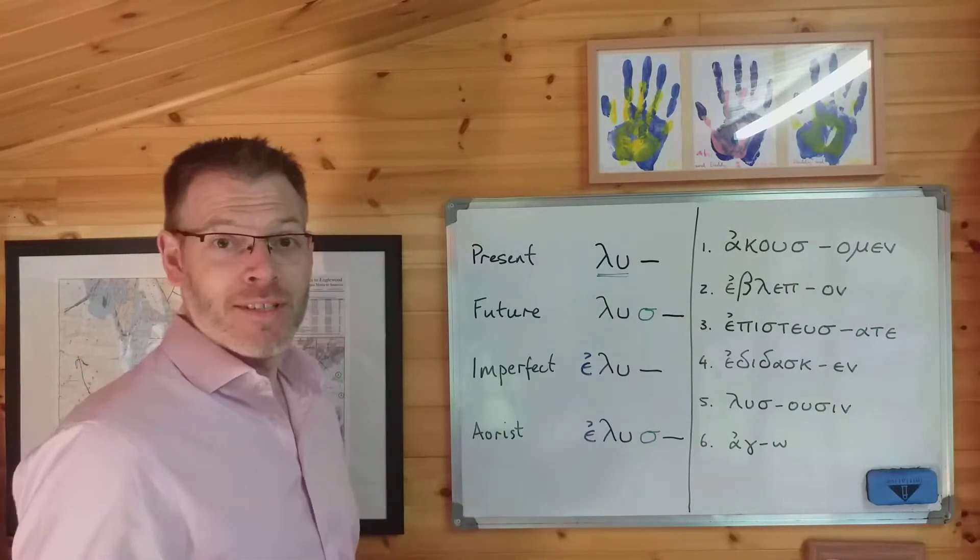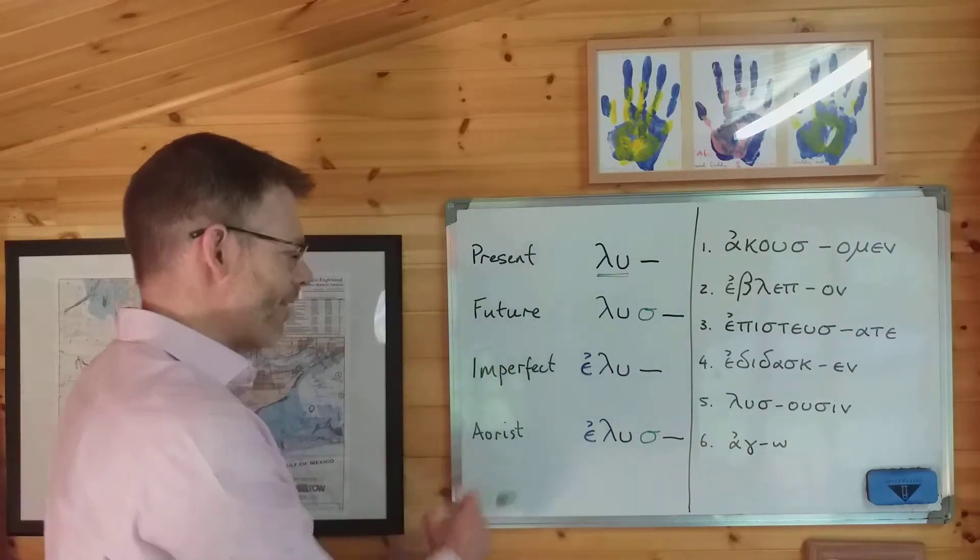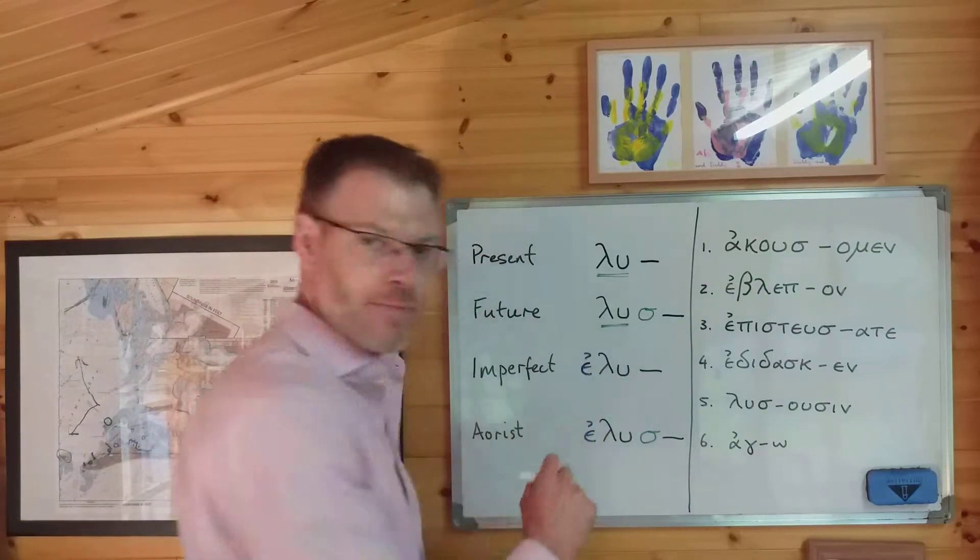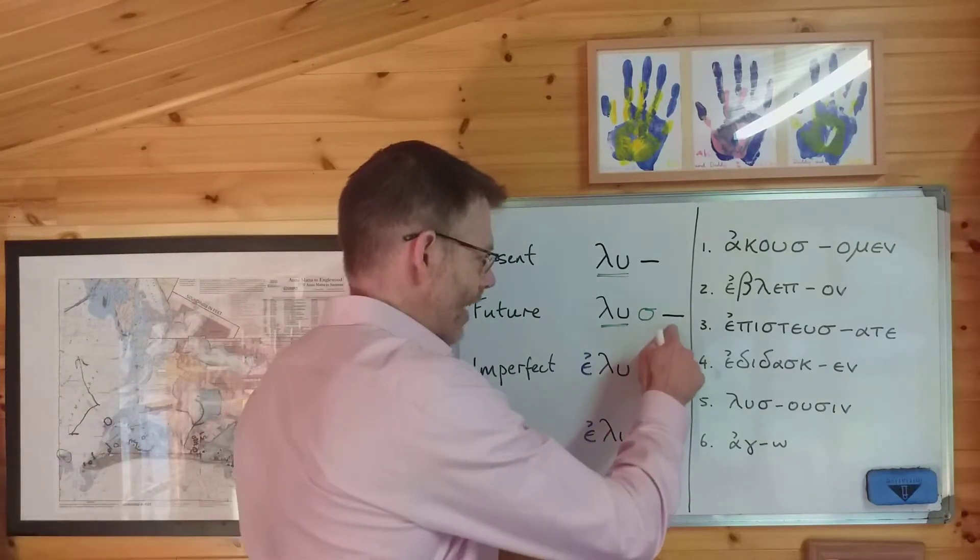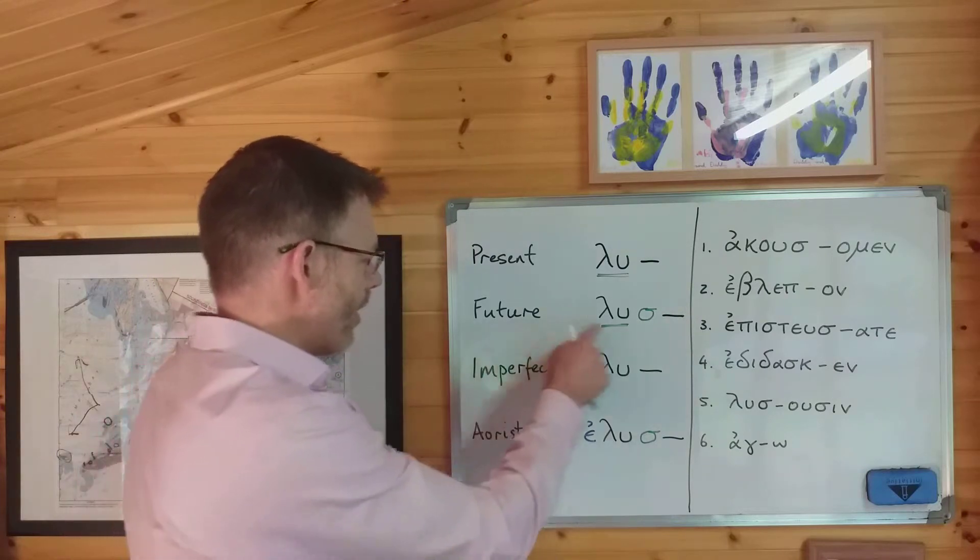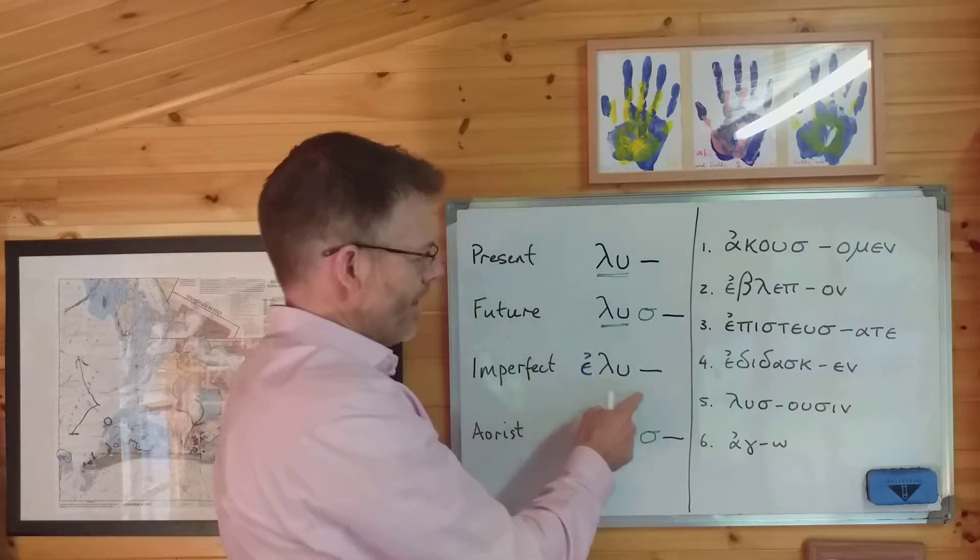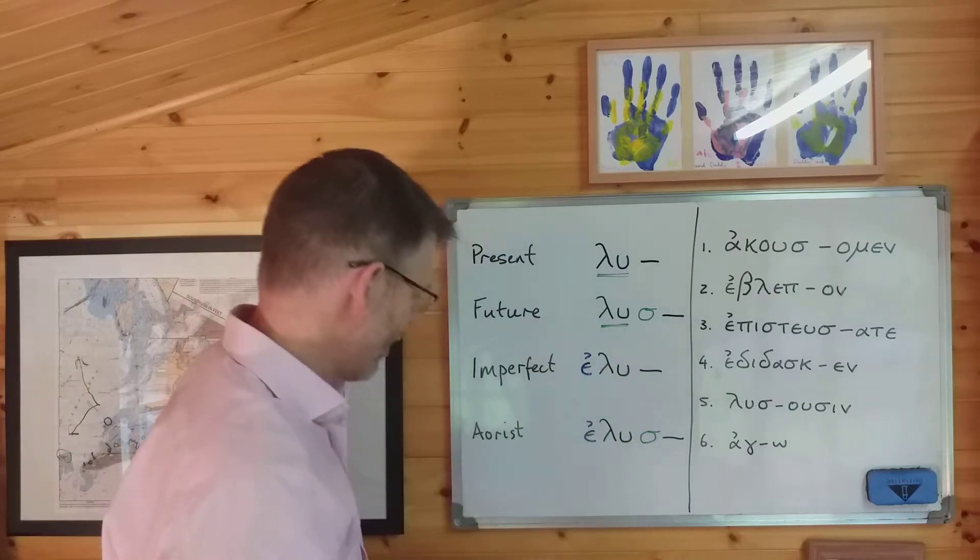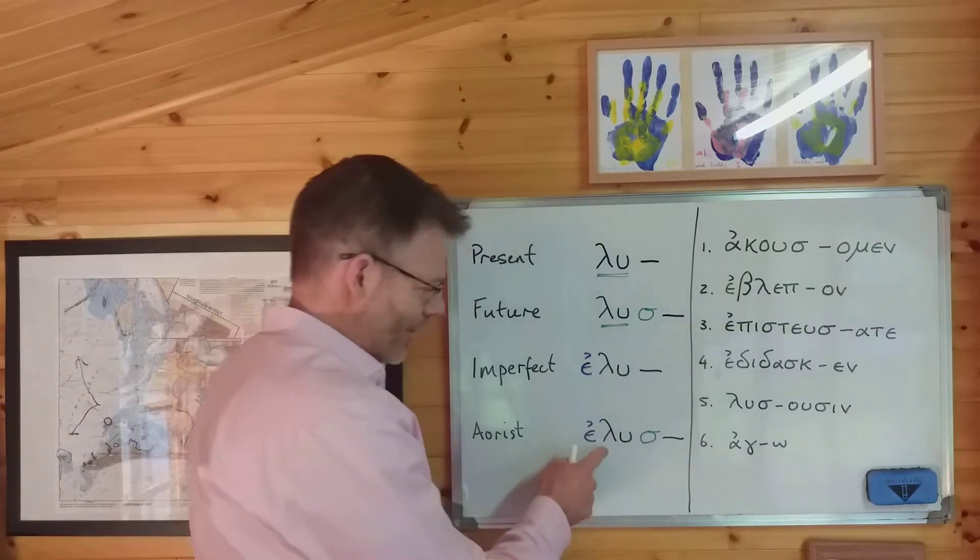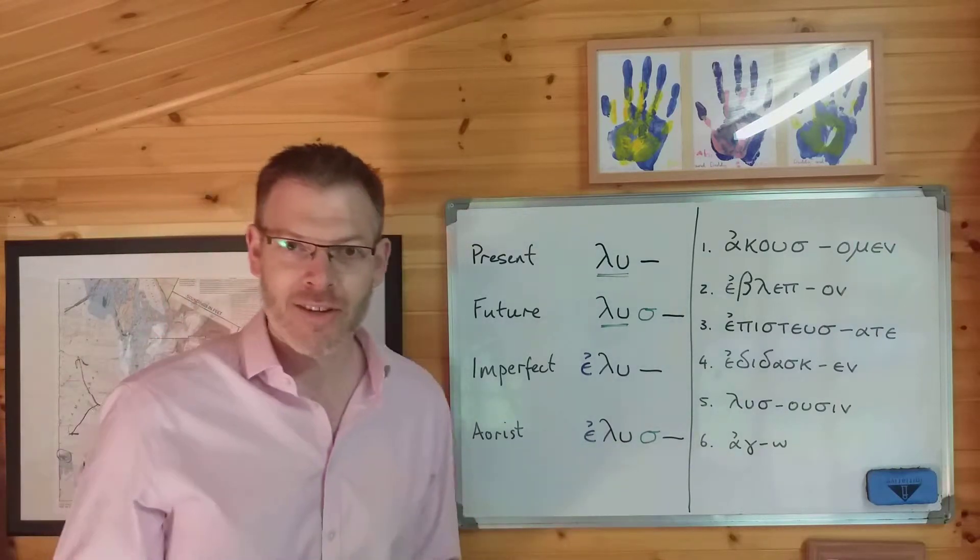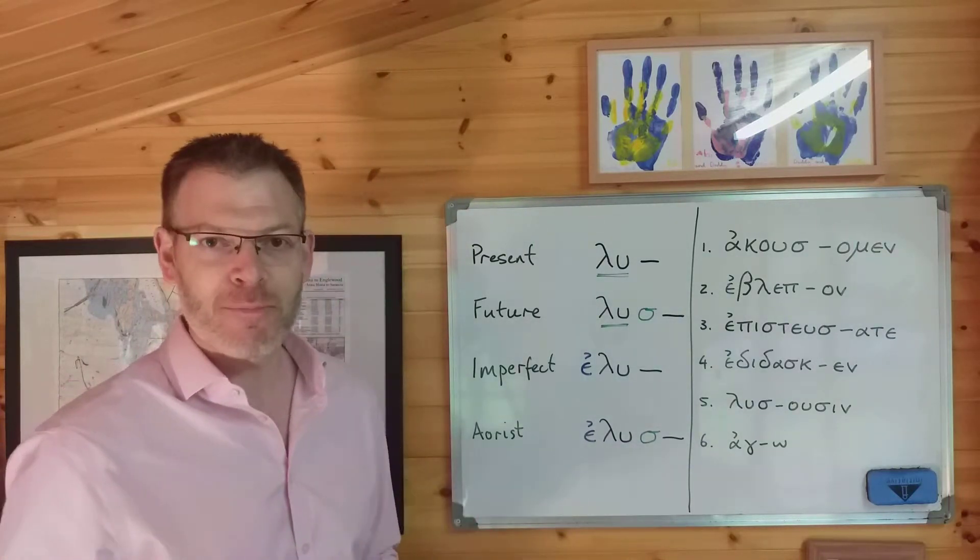Now, the same thing happens with the future, imperfect, and aorist tenses. You've got the stem, you've got λυω, and you've got an ending. Notice there, λυω and there's the ending. In the imperfect, you've got ελυω and you've got the ending. And then in the aorist, you've got λυω, the stem, and then the ending. So all so far so good.